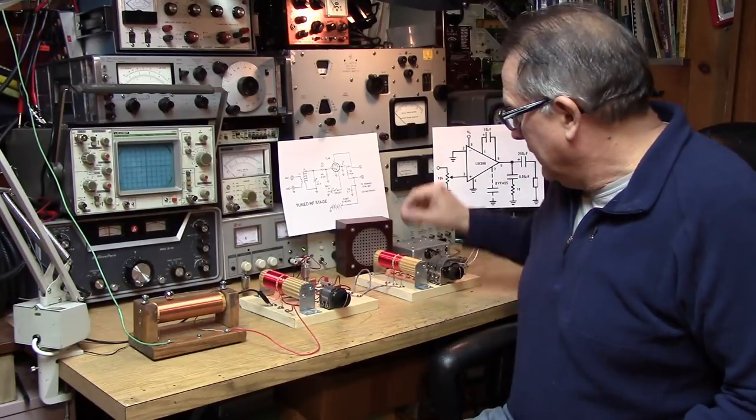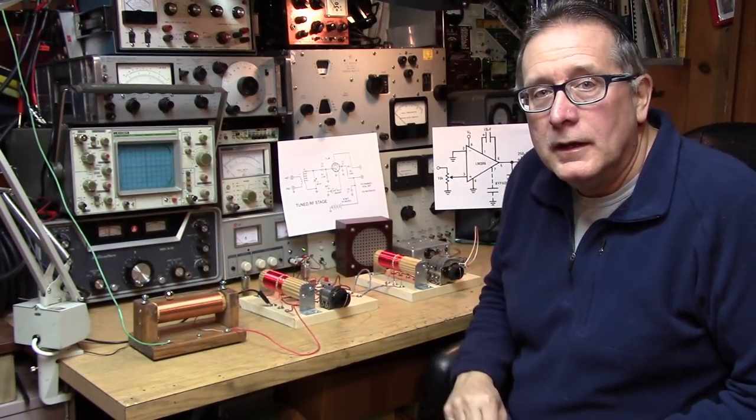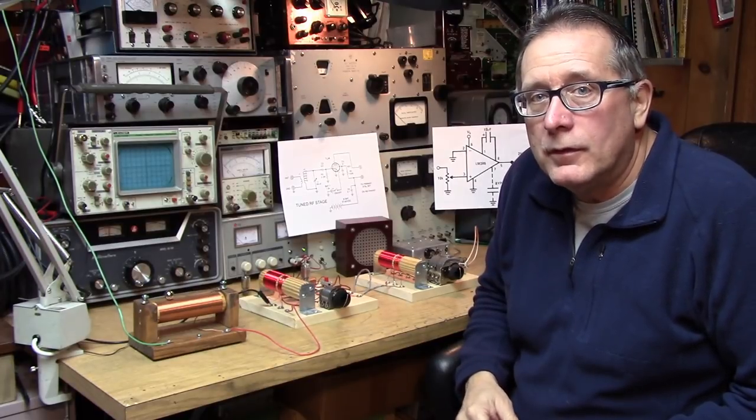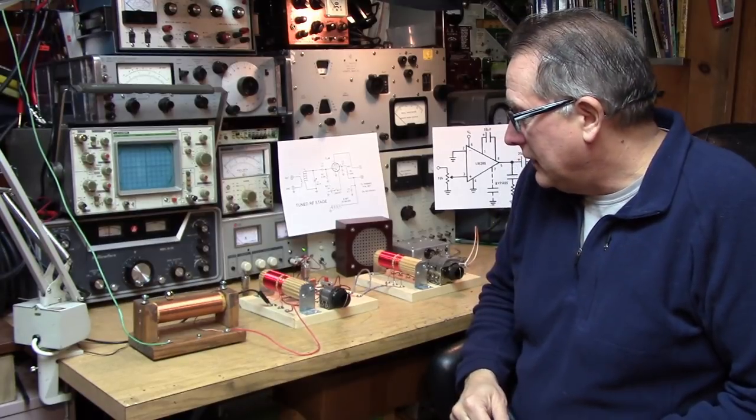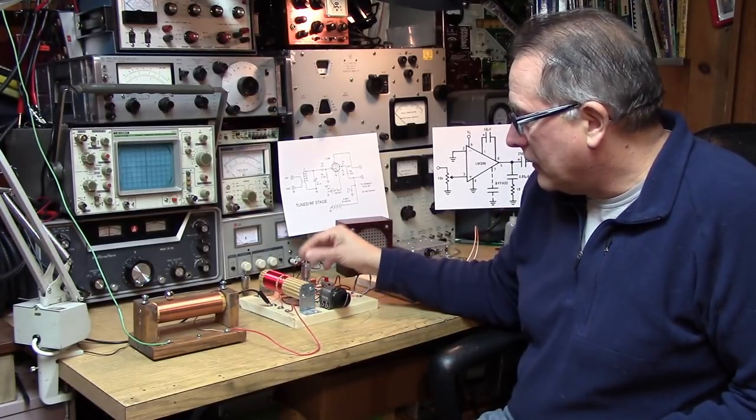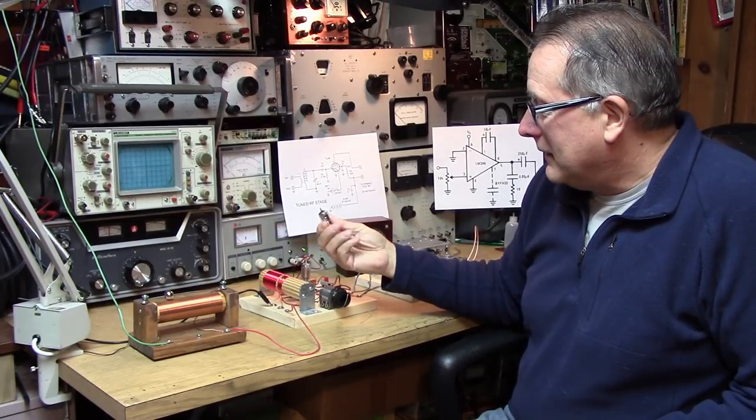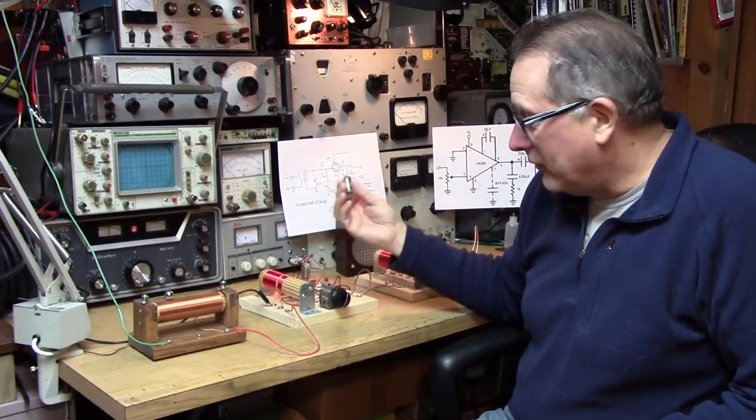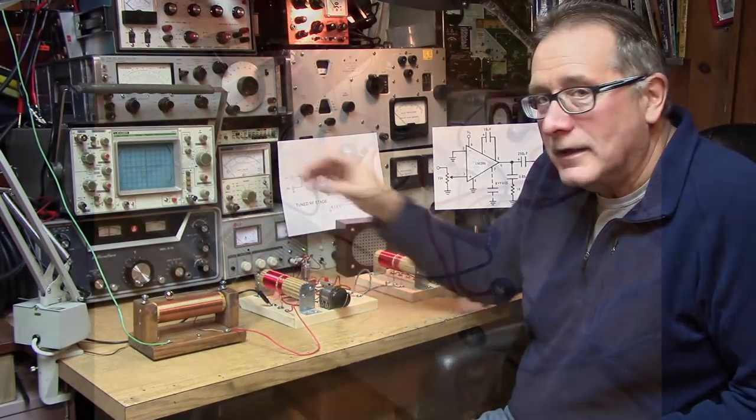So let me just turn this down. WCBS coming out of New York. In part two, we're going to continue with the solid state preselector and the TRF, of course, can be transformed into a vacuum tube circuit. Of course, the vacuum tube circuit came first, but we're showing it second in the video.